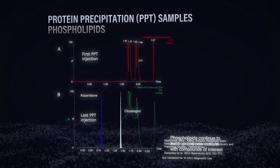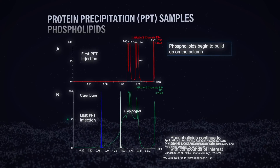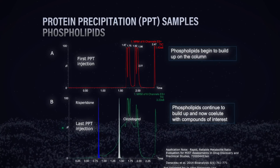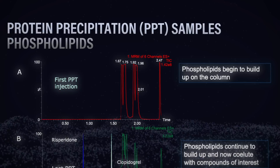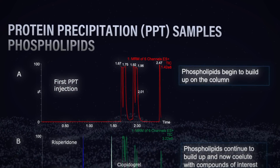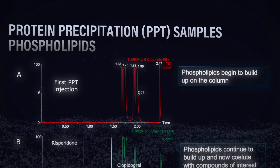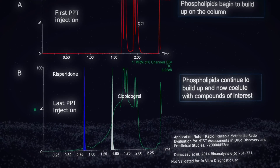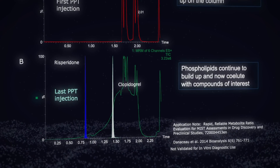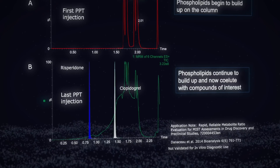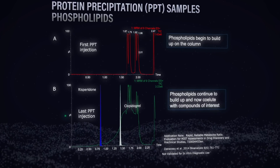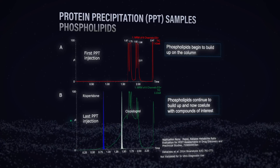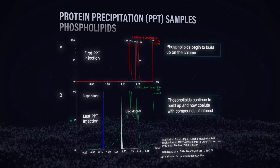If we look at the chromatography to see how these phospholipids actually impact the analytical results, we can see a really interesting story. Looking at the top chromatogram — the first protein precipitation injection — the phospholipids have just started to build up but aren't causing any problem. But by the last injection in the bottom chromatogram, those phospholipids have really built up and are starting to co-elute with our risperidone and clopidogrel, causing matrix effects, higher column back pressure, and problems with reproducible quantification.